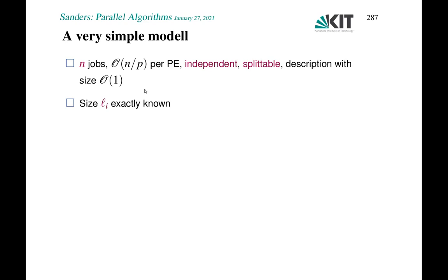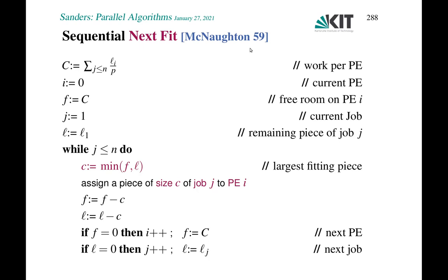Here's an algorithm that does this very well in a sequential setting — McNaughton's algorithm from the 1950s. Before going through the pseudocode, let's look at the picture. Suppose these are my jobs, and the height of each rectangle is the execution time. I sum up all execution times, then draw boxes whose width is total execution time divided by number of processors. I simply pack the boxes on the line horizontally — this goes here, this goes here, this goes here, and so on.